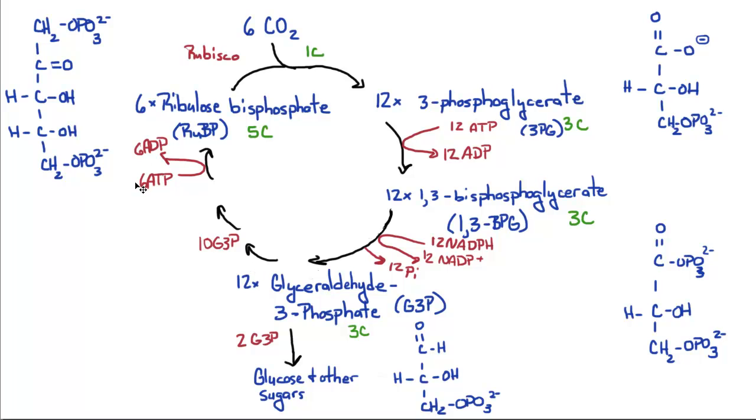Ten of these combine with six ATPs that are hydrolyzed to reform the six ribulose-bisphosphates you need. Then, the cycle starts all over again.